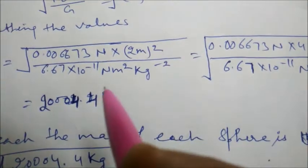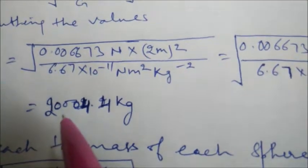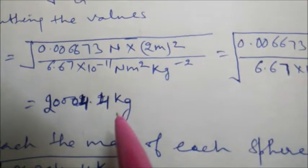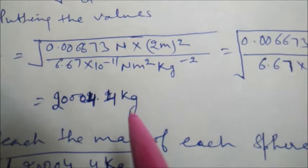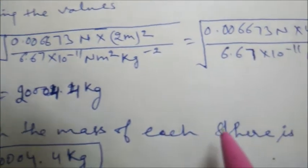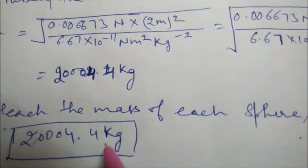After doing the calculation, the result which will come out is 200004.4 kilograms. Because both the iron spheres are identical, the mass of each sphere is 200004.4 kilograms.